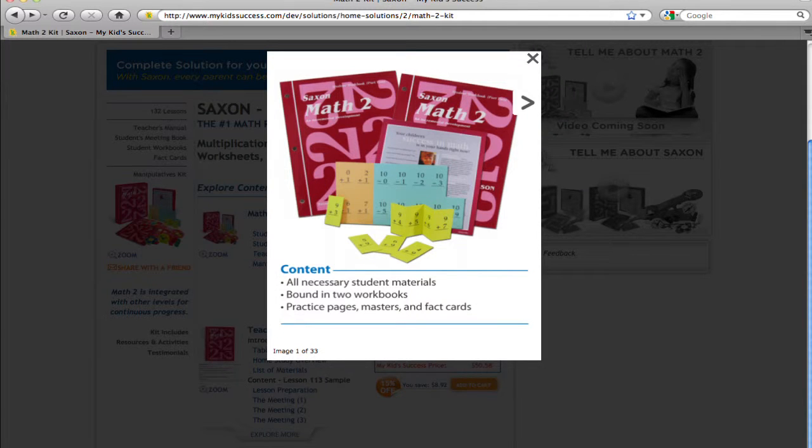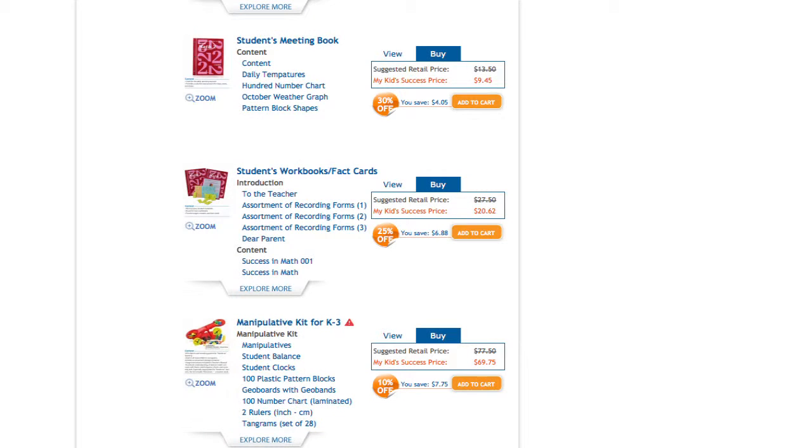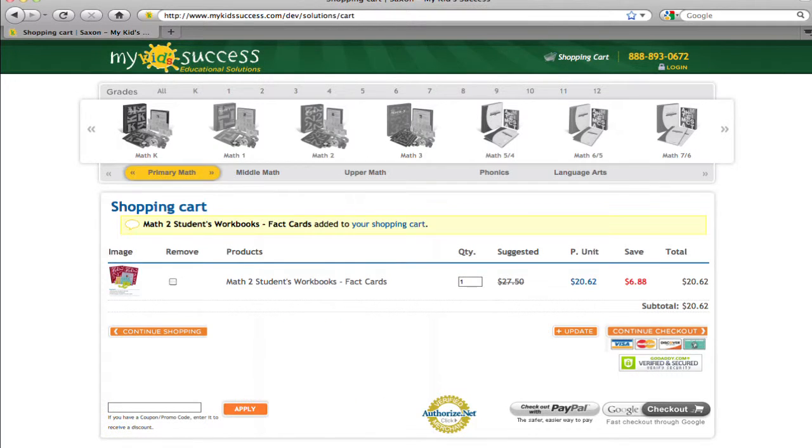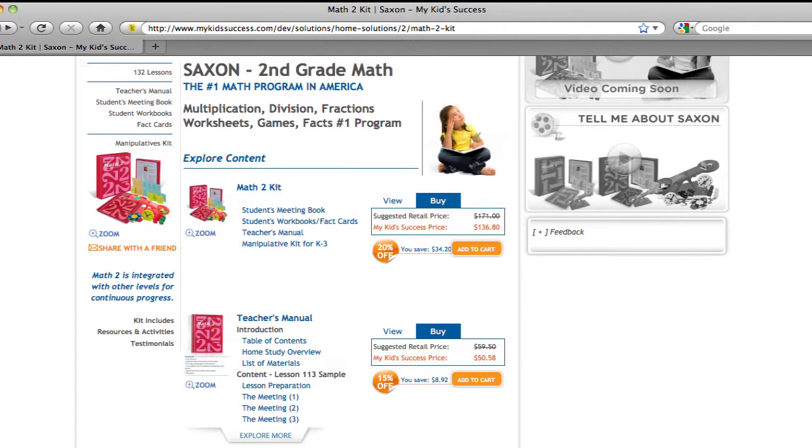Your child's success in Math 2 is just a click away. To buy the student workbooks and fact cards, receive the discount and strengthen your child's math skills, just click on the add to cart button. You can receive a greater discount if you buy the entire Math 2 complete homeschool program.